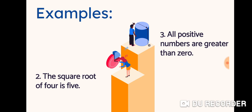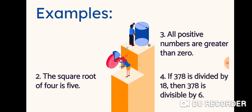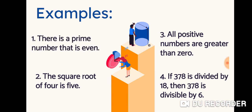If 378 is divided by 18, then 378 is divisible by 6, which is also true. Another example: there is a prime number that is even, which is also true. A prime number that is even — that is only 2.